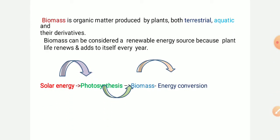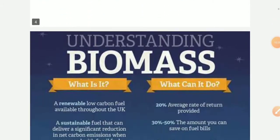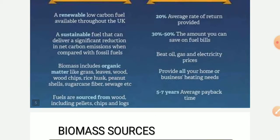Biomass is organic matter produced by plants — both terrestrial and aquatic — and their derivatives. Biomass can be considered a renewable energy resource because plant life renews and adds to itself every year through solar energy and photosynthesis. Biomass energy conversion can provide a low carbon fuel, with an average rate of return of 20% and energy savings of 30 to 50 percent on fuel costs.